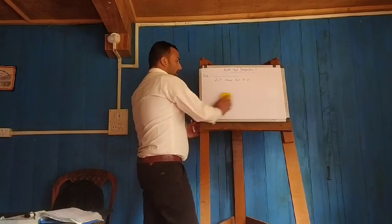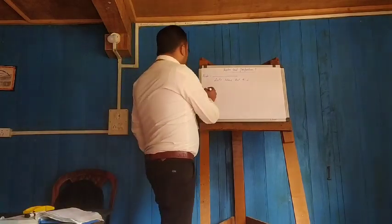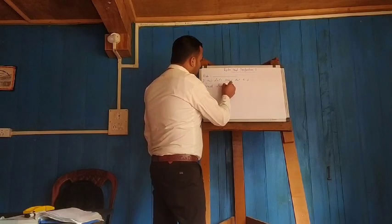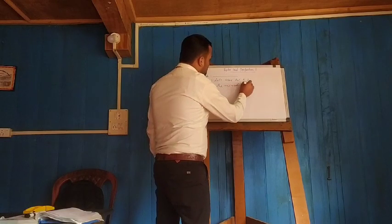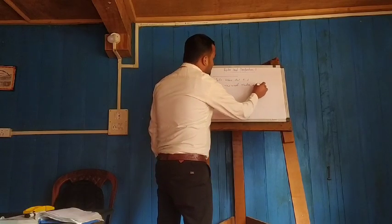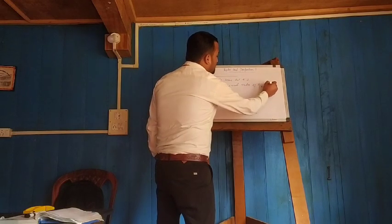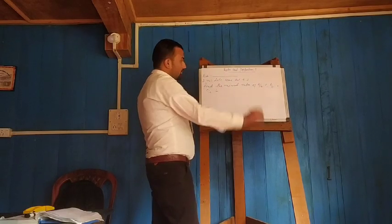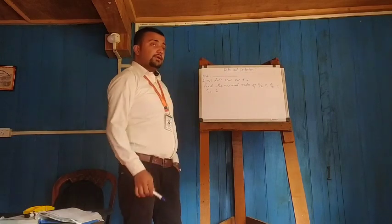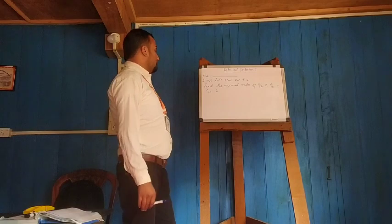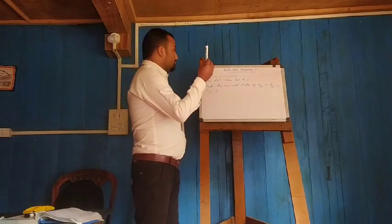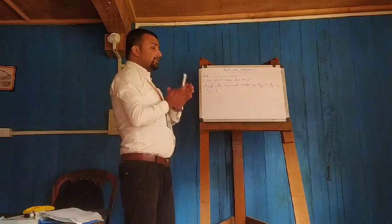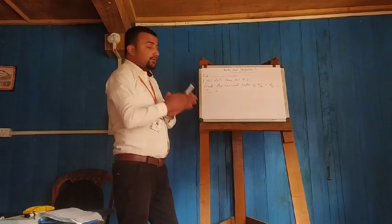Now let's come to question number 4. Find the mixed ratio of A/B is to C, B/C is to A, and C/A is to B. These are the three ratios. To find the mixed ratio, multiply antecedent with antecedent and consequent with consequent. The newly formed ratio is called the mixed ratio or compound ratio.